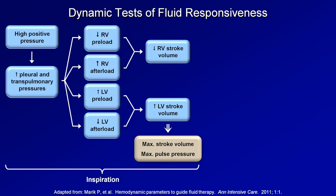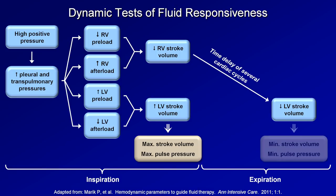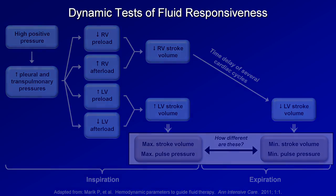Once inspiration is over, it takes several cardiac cycles for the diminished RV stroke volume to result in decreased delivery of blood to the LV, where as a consequence of decreased myocardial stretch, the LV stroke volume will decrease. This results in a minimum LV stroke volume and minimum pulse pressure, both occurring near the end of expiration. To answer the question of whether or not a patient is likely to be fluid responsive, we need to compare the maximum and minimum. If these are significantly different, the patient is likely responsive.